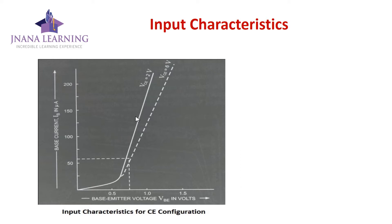This shows that the input resistance is larger in common emitter configuration compared to common base configuration. Another point: for a given value of VBE, as VCE increases, IB decreases — the base current will have a lower value. The reason is that higher values of VCE provide greater collector-base junction reverse bias.